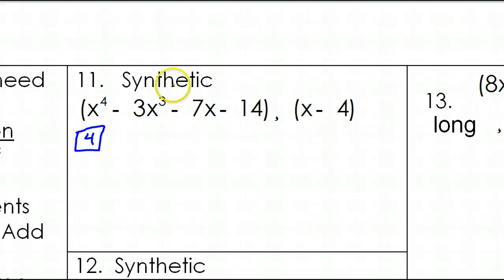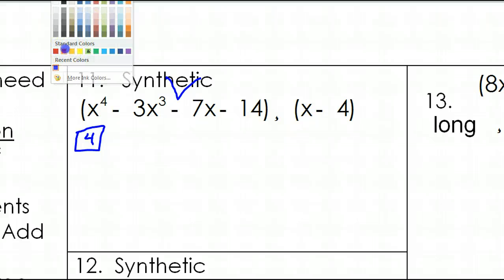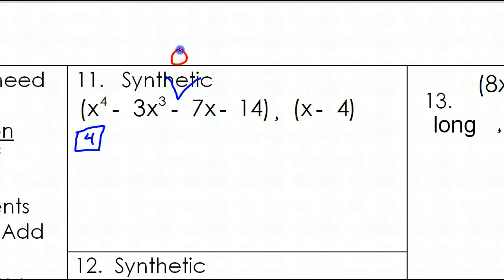Yes — there's a missing term right here. It goes degree 4, 3 — where's the 2? Then 1, 0. So we will need to put in an extra term for the x squared term that's missing. Think of it as 0x squared right in there.